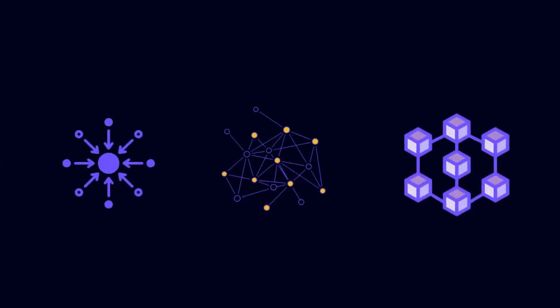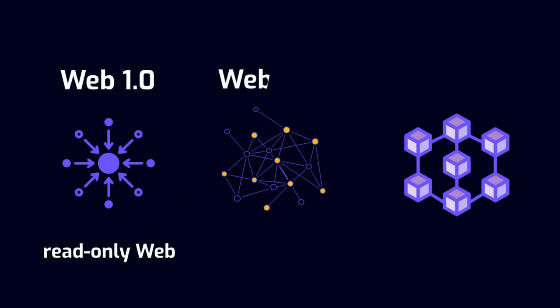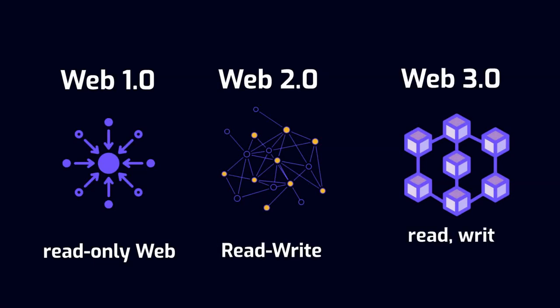To understand better, it's helpful to break the web's short history into three parts: Web 1.0 Read-Only Web, Web 2.0 Read-Write, and Web 3.0 Read-Write-Execute Web.